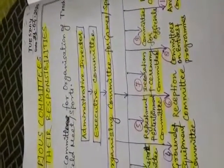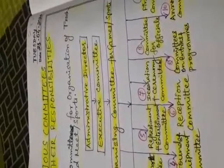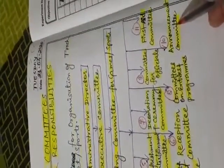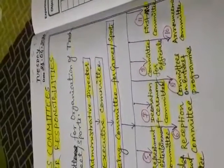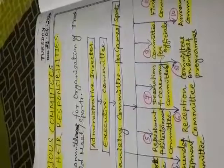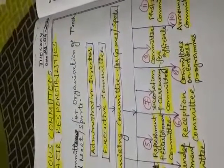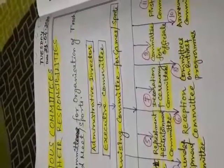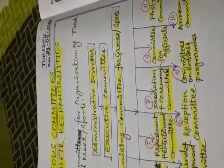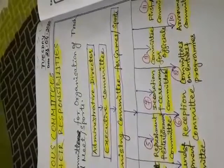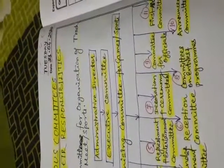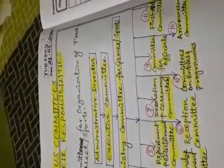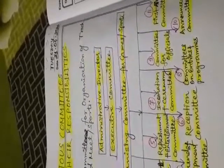Next comes the announcement committee. This committee is responsible for making various announcements during the sports meet or games. It announces regarding opening and closing ceremonies, which event and when it is going to take place, the names of the officials conducting the event, and the running commentary of sports events.